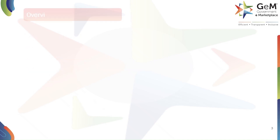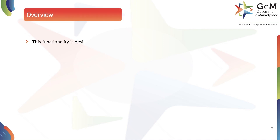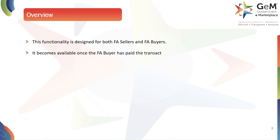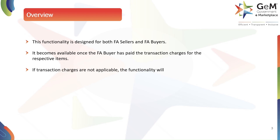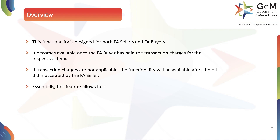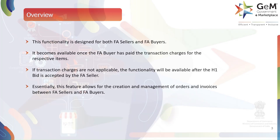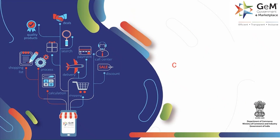Now let's look at the overview. This functionality is designed for both FA sellers and FA buyers. It becomes available once the FA buyer has paid the transaction charges for the respective items. If transaction charges are not applicable, the functionality will be available after the H1 bid is accepted by the FA seller. Essentially, this feature allows for the creation and management of orders and invoices between FA sellers and FA buyers.